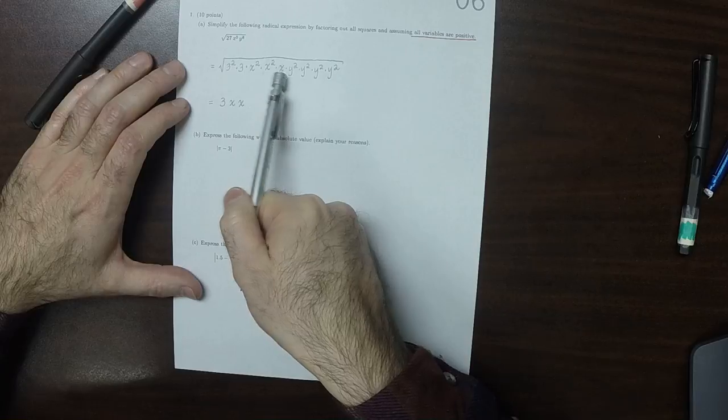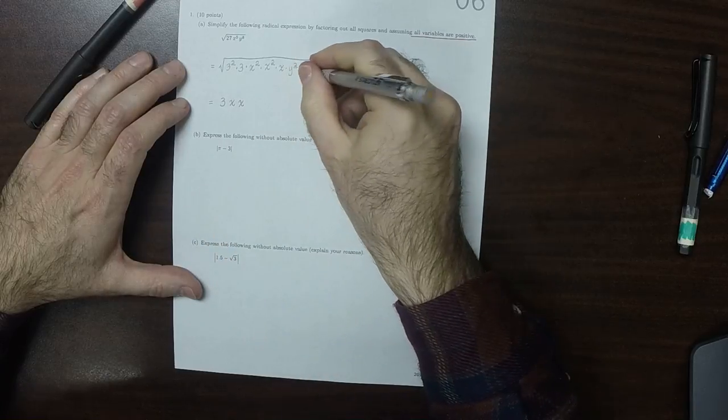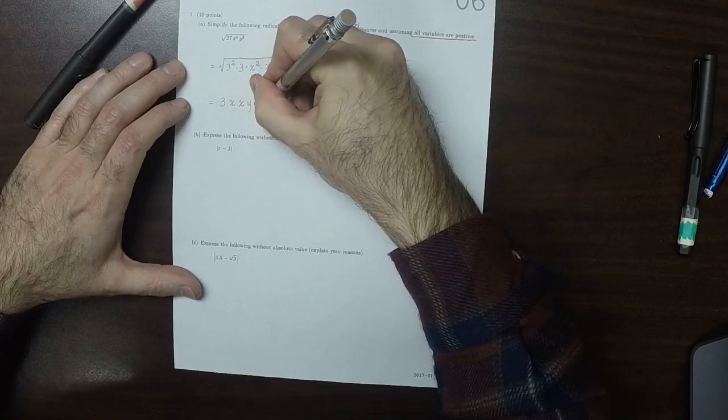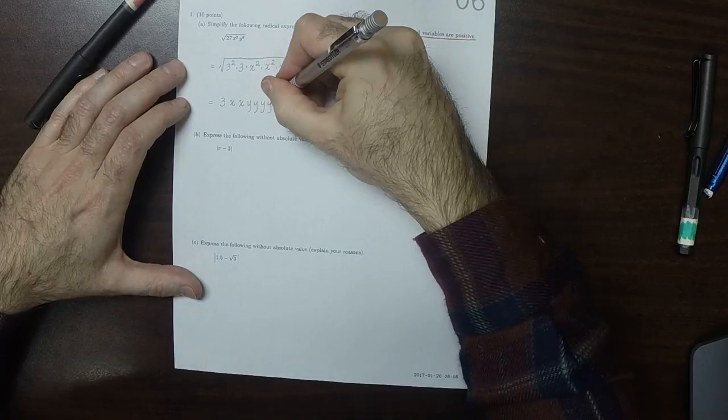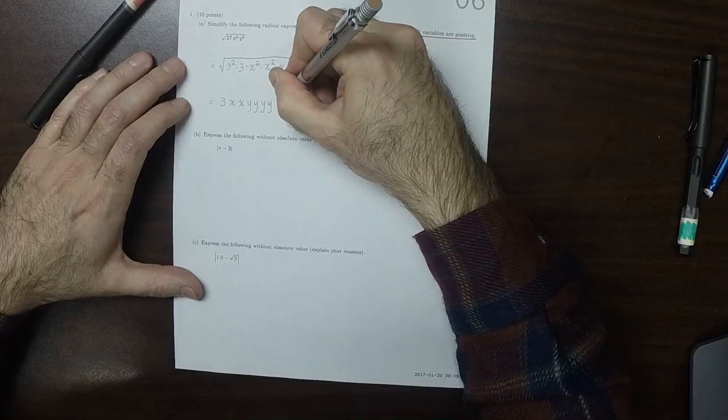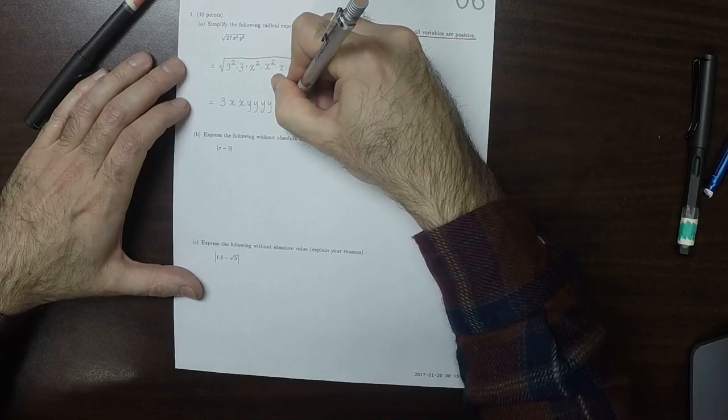That x remains, that 3 remains, that x remains. And then we get 4 y's to come out. So y, y, y, y. And then square root of the things that remain, 3 and x.